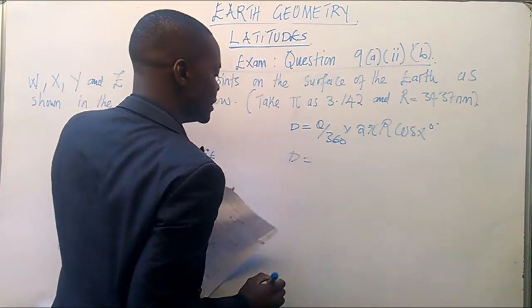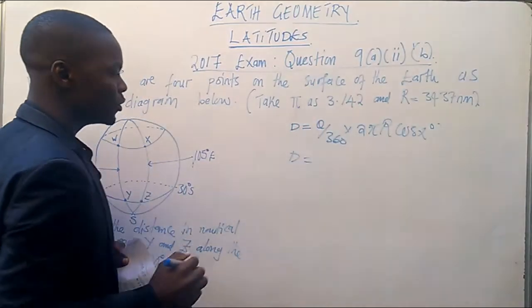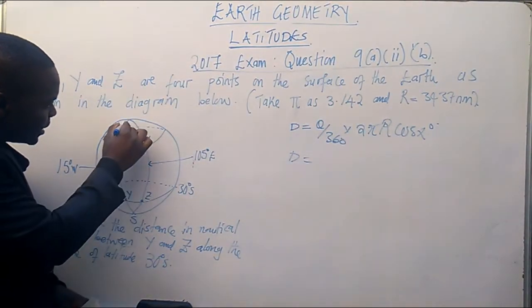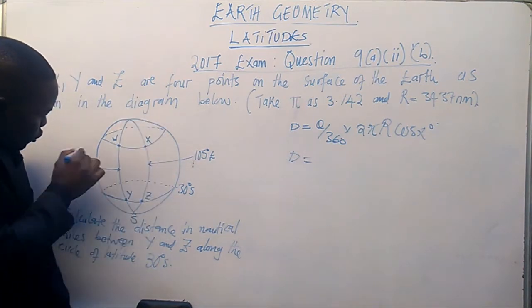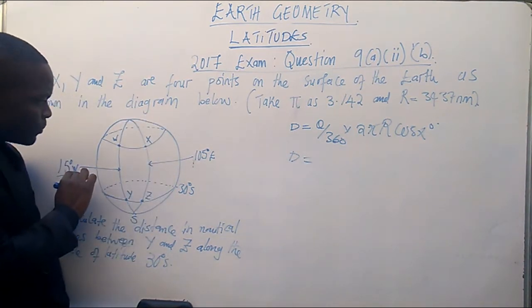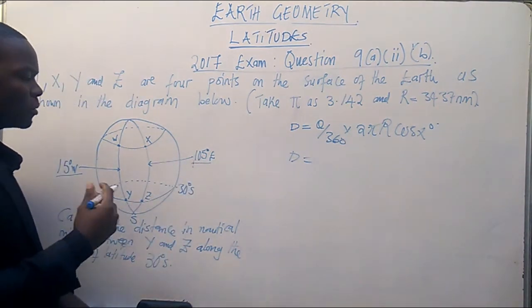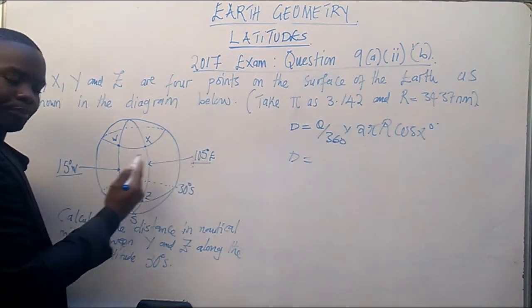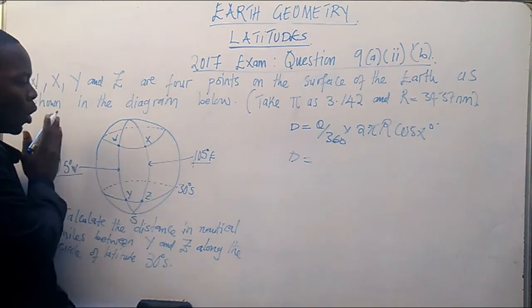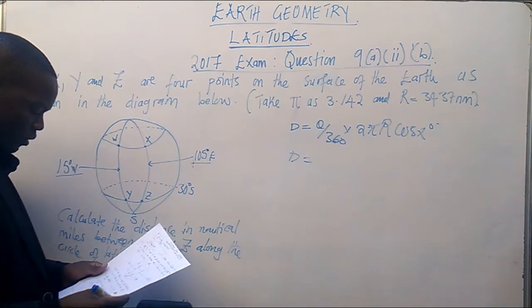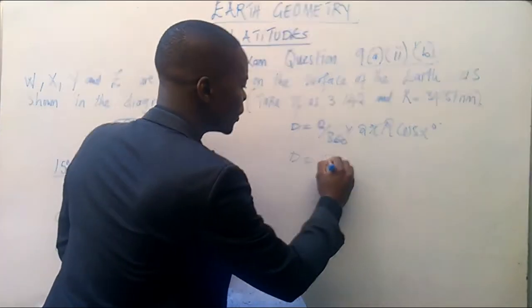So, distance D is equal to theta. We said it's a difference in longitude. So we have got this longitude and this longitude. So this longitude is 15 degrees west. This one 105 degrees east. Therefore, what must we do? We must add them because this one is west. This one east. So when you add 15 plus 105, it's going to give you 120.